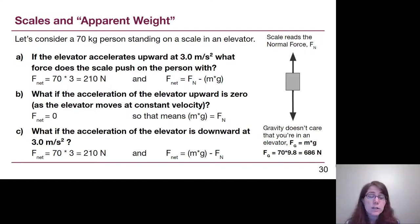However, if the acceleration is pointing downwards, then the net force is 70 times 3, so 210 newtons. And in order to calculate the net force, we would have the forces in the direction of acceleration, gravity, minus the forces opposite the direction of acceleration, the normal force.